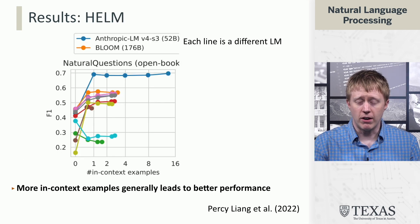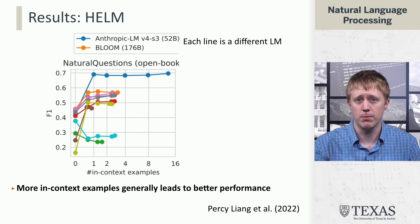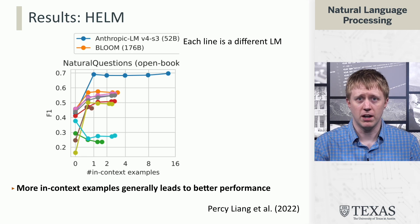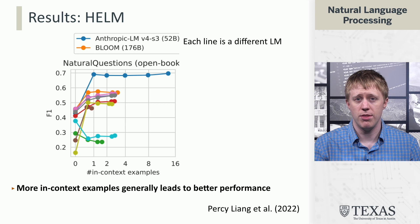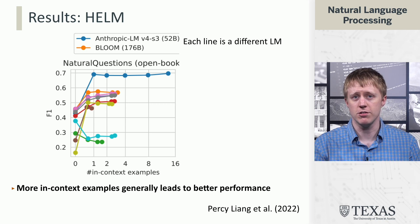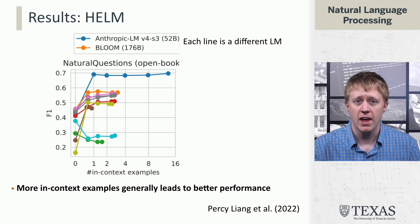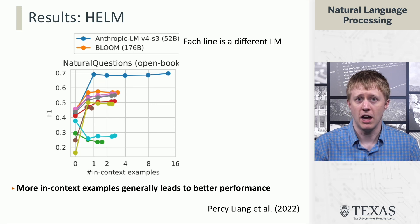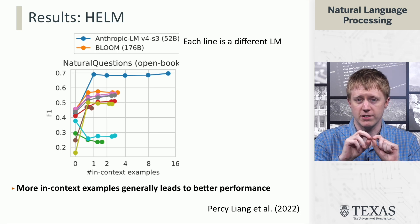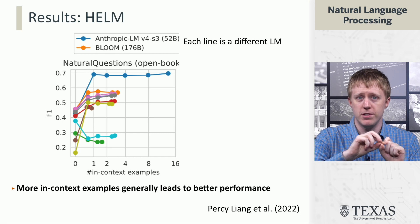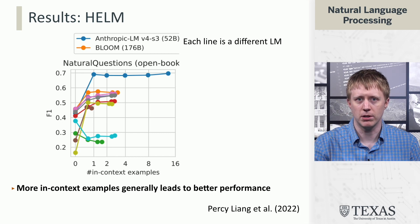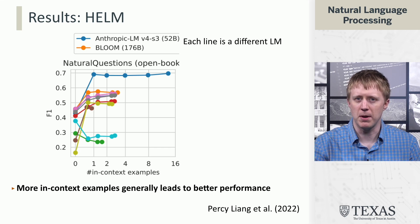We've seen that you can give different numbers of examples — how well does this work on more modern models and how much does the number of examples matter? This is from a paper called HELM from the Stanford Center for Foundation Models, led by Percy Liang et al. The results are surprising: they do find that few-shot prompting helps a lot. Most models — each line is a different model — go up dramatically when you go from zero to one example, so one example seems to really help. Beyond that, subsequent examples don't give as much benefit as might be expected.